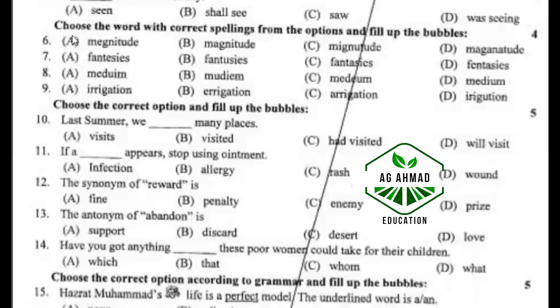Take the correct spelling of the word 'magnitude': M-A-G-N-I-T-U-D-E. B option.